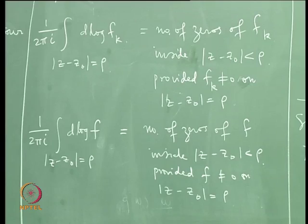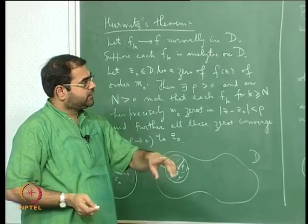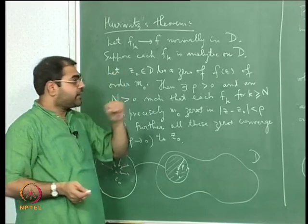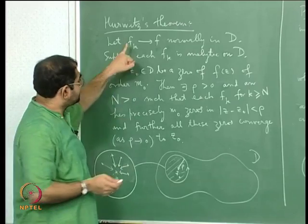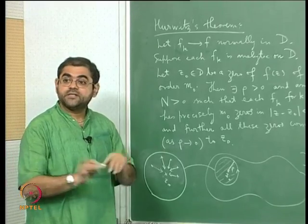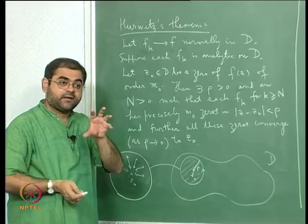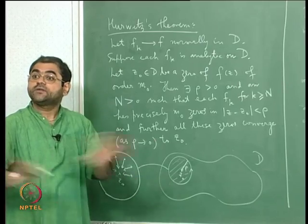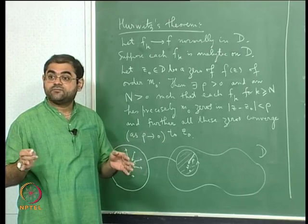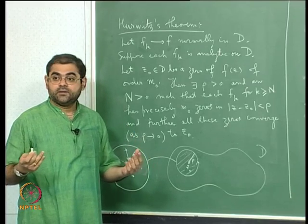Here is where a technicality comes in. Since f_k converges to f normally and each f_k is analytic, f is analytic — that is what we have already seen. Since f is analytic, the zeros of an analytic function are isolated. So z_0 is an isolated zero, meaning you can find a disc surrounding z_0 where there is no other zero of f. This is technically because f is analytic and the zeros of an analytic function are isolated — a fact due to what is called the identity theorem.